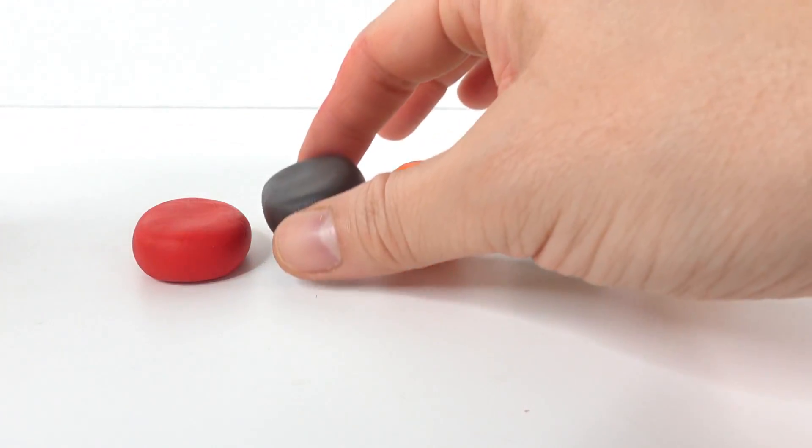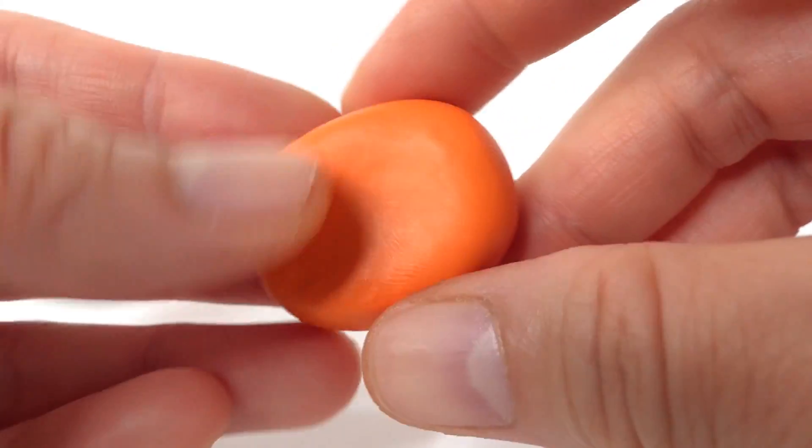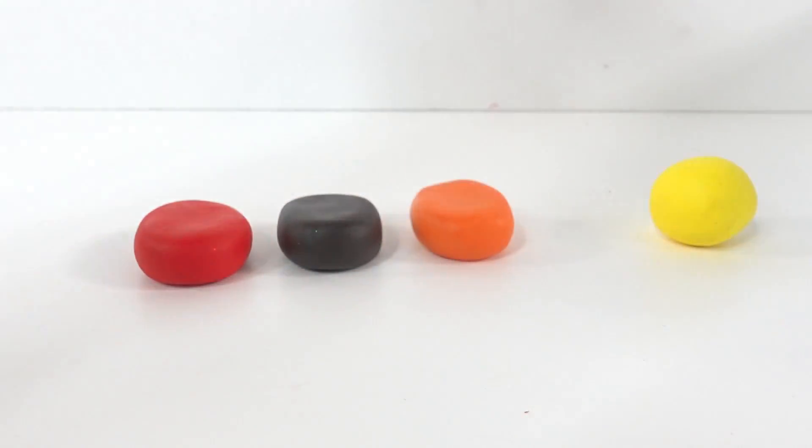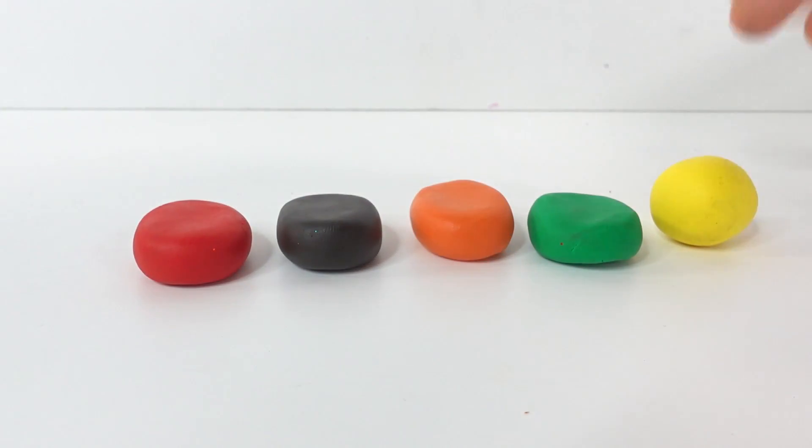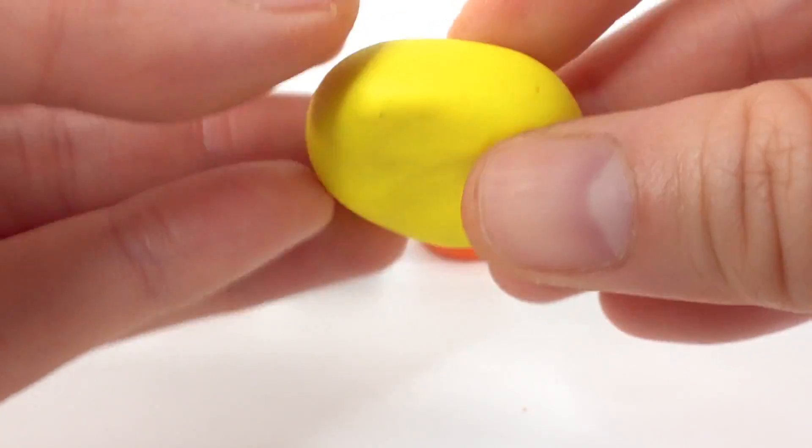Here is black. Here is orange. Next we have green. And the last one yellow.